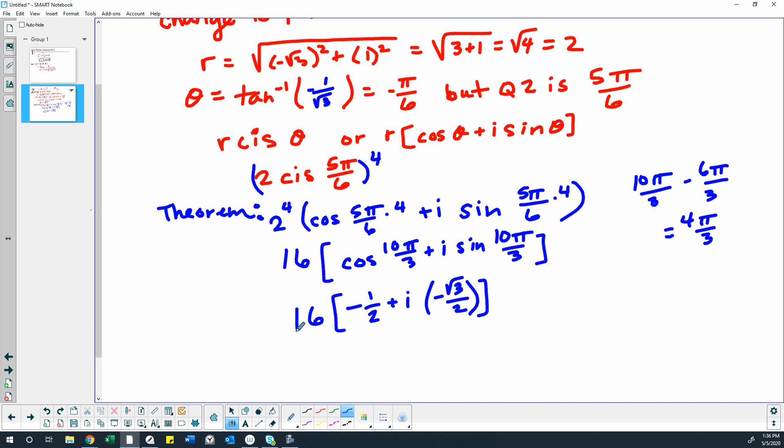So then we distribute our 16 through and we get negative 8 minus 8i square root 3. Did I simplify all the pieces in my head properly? Because I distributed the 16 and I've got the negative. And 2 goes into 16 8 times.